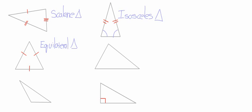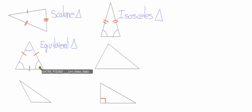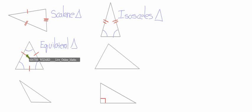Did you know that when you have an equilateral triangle where all three sides are equal, all three angles will be the same? Furthermore, you know that the interior angles of a triangle always add up to 180 degrees. If these angles are the same size, they share this 180 degrees, which means that each of these angles will be 60 degrees.